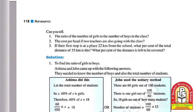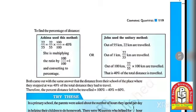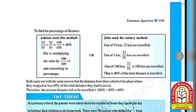Question 3: The first stop is at a place 22 km from school when the total distance is 55 km. What percentage of the distance is left to be covered? Asima used this method: 22/55 × 100 = 40%. So 40% of the distance has been covered. She converted the ratio to percentage by multiplying by 100.